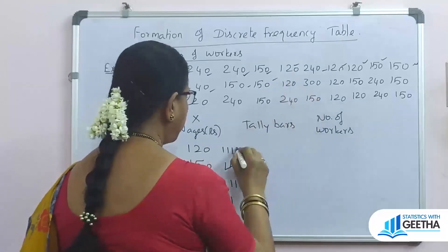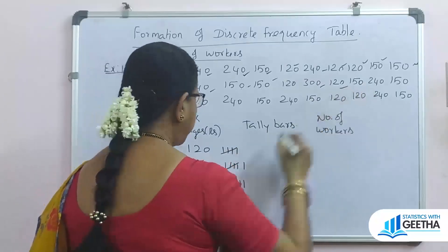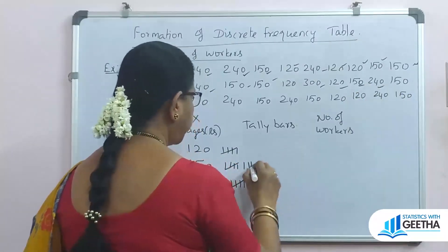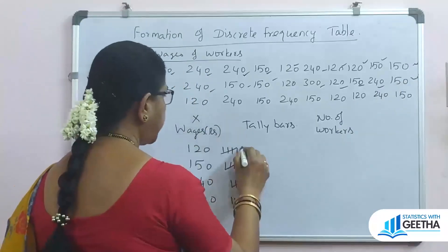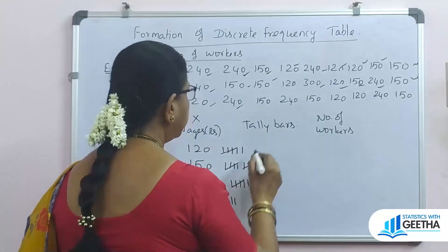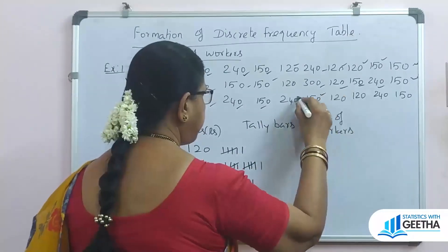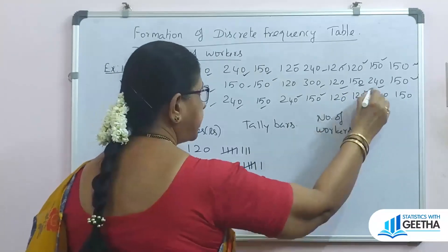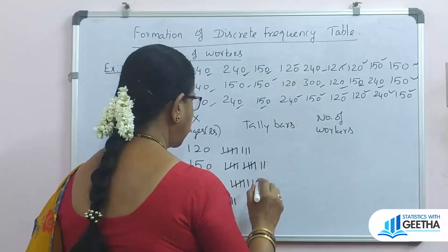Continuing the data: 150, 120, 300, 120, 150, 240, 150, again 120, 240, 150, 240, 150, 150, 120, again 120, 240, 150, 240, 150.